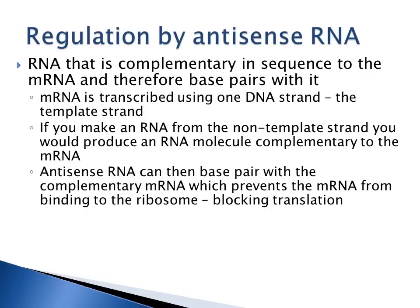Cells also have regulation by antisense RNA, which is RNA complementary in sequence to the messenger RNA that can base pair or hybridize with it. The messenger RNA is transcribed from the antisense DNA strand; if you make an RNA from the non-template strand, you produce an RNA molecule complementary to the messenger RNA. That antisense RNA can then base pair with the messenger RNA, preventing it from binding to the ribosome and blocking translation — the production of protein.